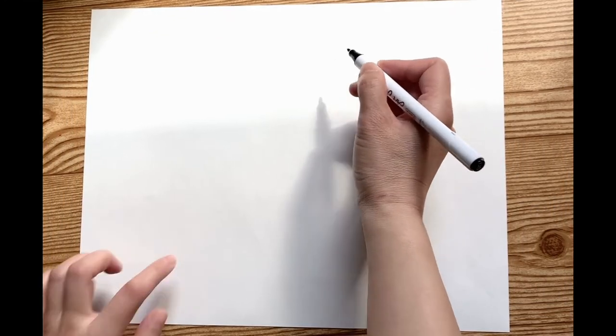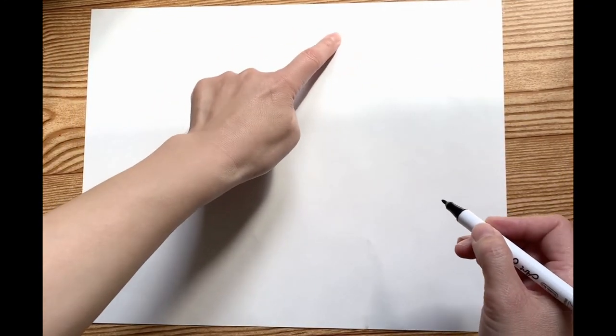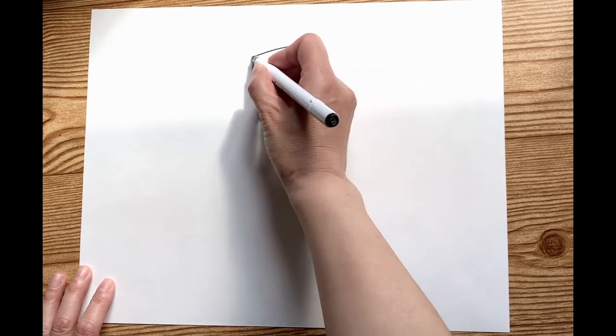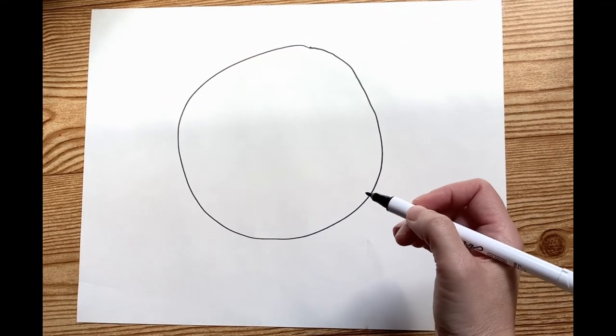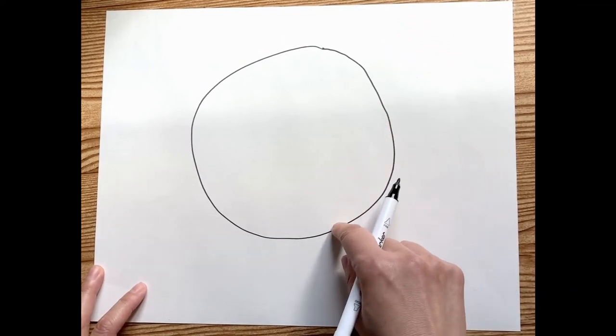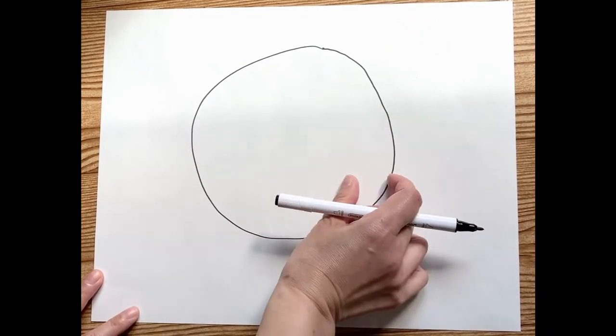Ladybug's shape is circle, so let's draw a circle. Make sure it's not too small. There are head and body. The head is smaller, body is bigger.